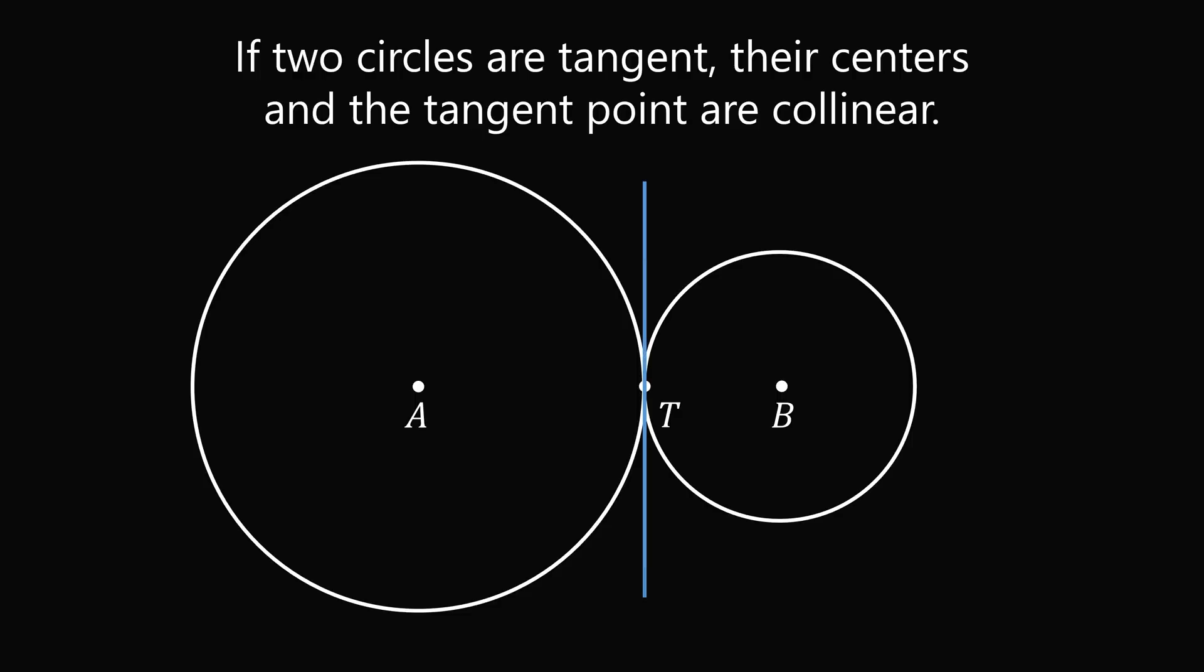Then, because T is a tangent point, AT will be perpendicular to the tangent line, and BT will be perpendicular to the tangent line. Therefore, ATB will be a straight line segment.